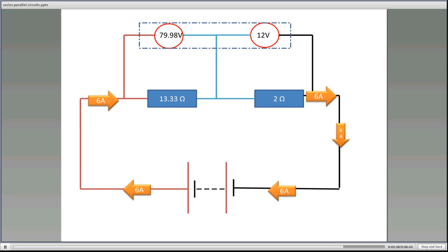Just to double check, and it's always good to have a second way of checking. Remember in a series circuit, the addition of the voltage drop should add up to the supply voltage. So if we add those two together, 79.98 volts plus the 12, hopefully we'll get the same as before, 91.98 volts.